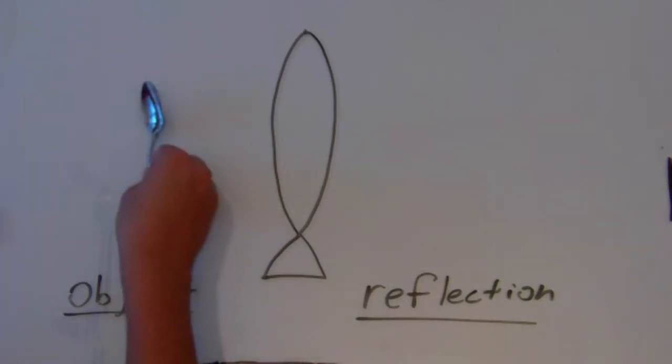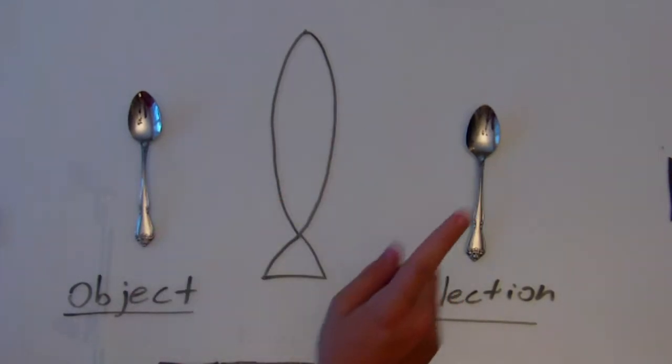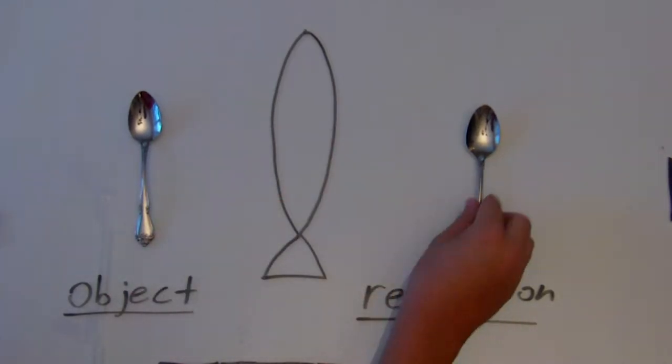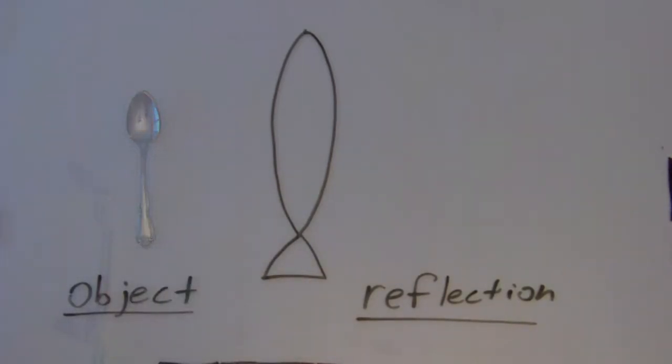Let's try another example, this time spoons. Here we have a spoon and its reflection. Checking to see if the reflection is superimposable upon its object, we see that the reflection is superimposable upon its object.